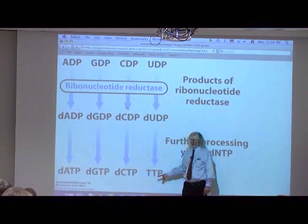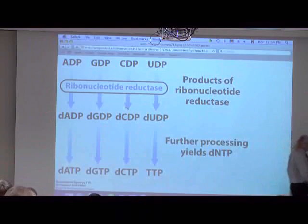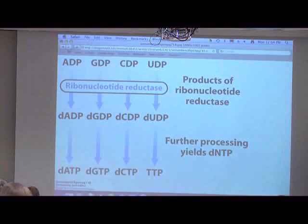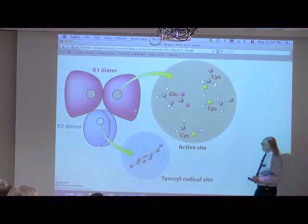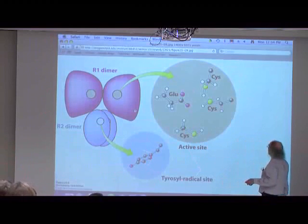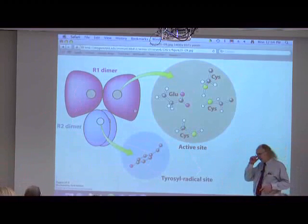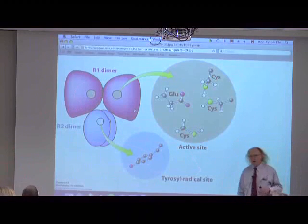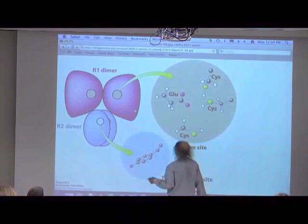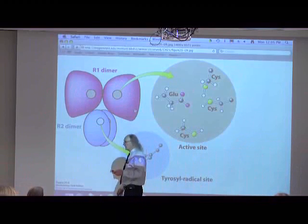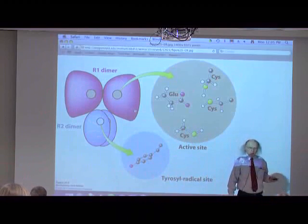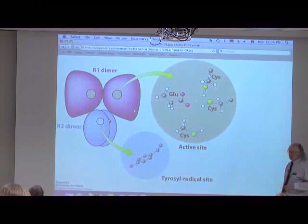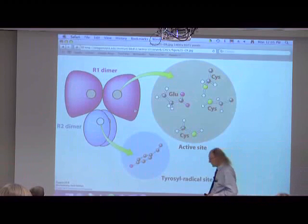Getting to TTP is a multi-step process — this is not a one-step process. Ribonucleotide reductase is a dimer of dimers, with two large subunits called R1 and two small subunits called R2. The R1 contains the active site, where the reaction is catalyzed. What this enzyme catalyzes is the conversion of the ribose in the ribonucleoside diphosphate to a deoxyribose.